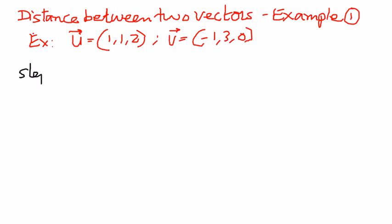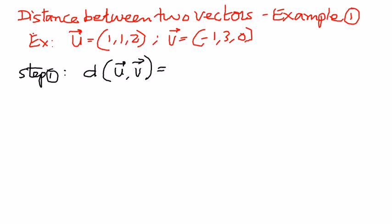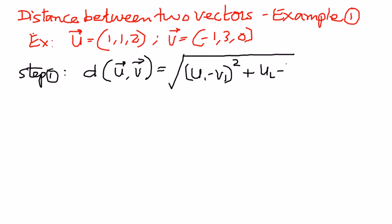Step number 1. The distance formula we have seen is as follows. The distance between vector u and vector v is given as the square root of (u1 minus v1) squared, plus (u2 minus v2) squared.